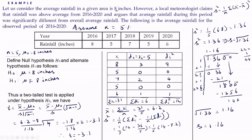Now we have to compare this calculated value of t = −3.1 with the table value for α = 5% and degrees of freedom = n−1 = 5−1 = 4 degrees of freedom.